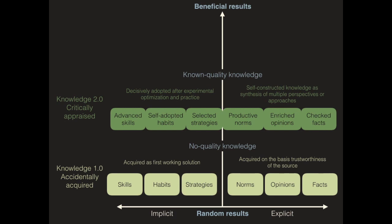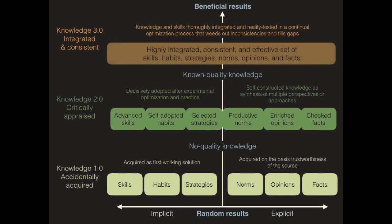This process becomes habitual and that gradually transforms no quality knowledge to known quality knowledge and eventually to knowledge 3.0 that is integrated and consistent. This happens when knowledge and skills are thoroughly integrated and reality tested in a continual optimization process that weeds out inconsistencies and fills gaps. The result is a highly integrated, consistent, and effective set of skills, habits, strategies, norms, opinions, and facts.